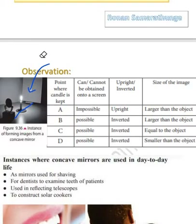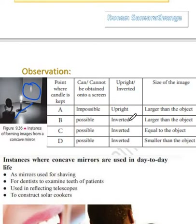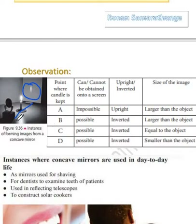In positions B, C, and D, the object is kept in these positions and the images will be inverted — they will look as if the candle is turned upside down. In position B, the image is quite larger than the object; in C, it is quite similar in size to the object; in D, the image is smaller than the object. As the distance between the candle and the mirror increases, the smaller the image gets.